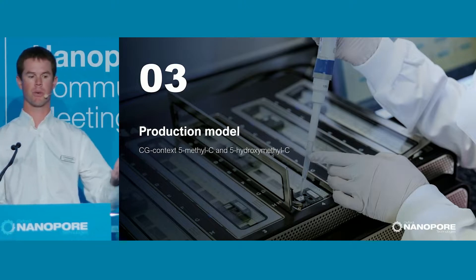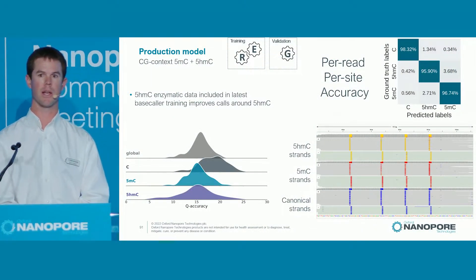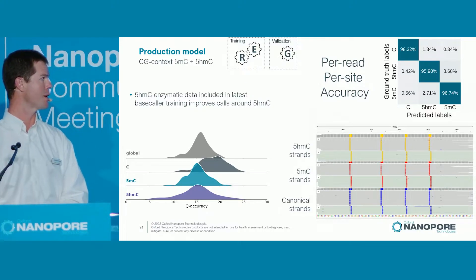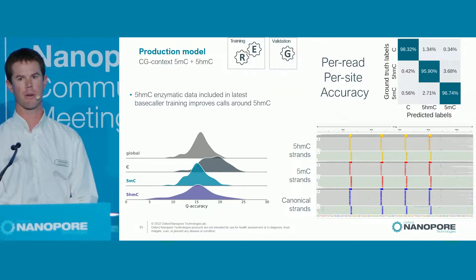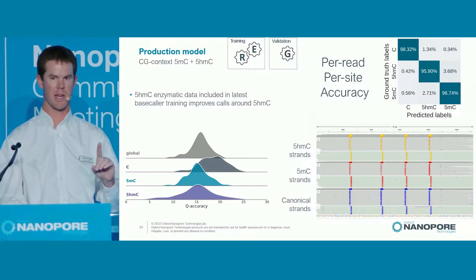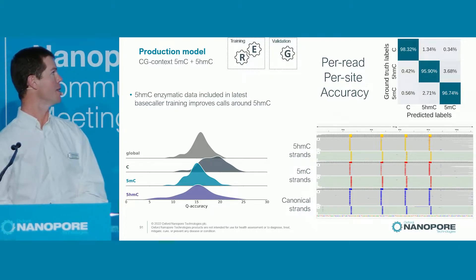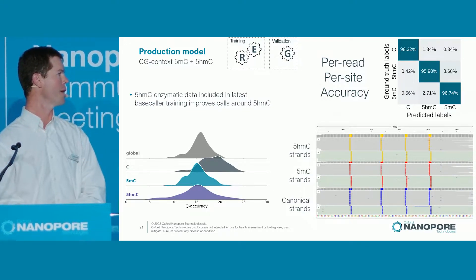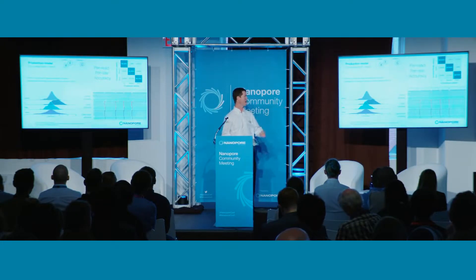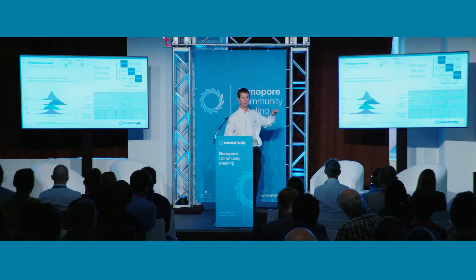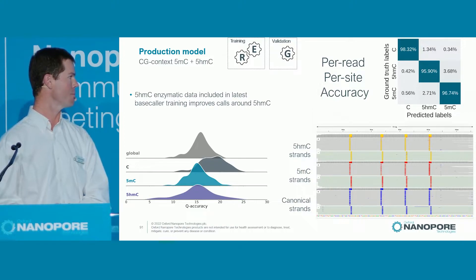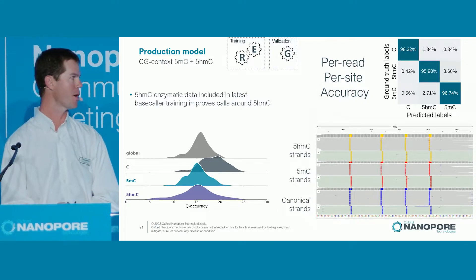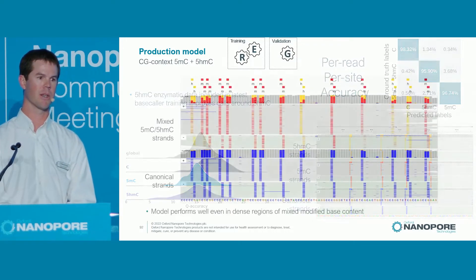We've just released the 5-MC plus 5-HMC model in CG contexts — a really exciting result. This shows three views of the accuracy of 5-MC and 5-HMC. On the top right is the per-read, per-site accuracy — not aggregated across reads, this is one site in one read. On the bottom is an IGV plot showing HMC strands where every site should be HMC, and you can see the per-read calls in orange. Really good accuracy across 5-HMC printed strands and canonical strands — amazing accuracy with this model.